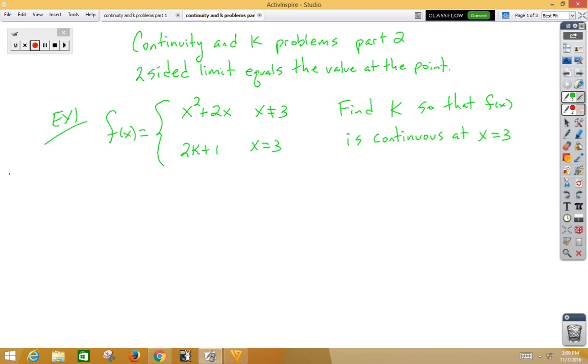So here we have a piecewise function, and the question is, find k so that f of x is continuous at x equals 3. Well, let's take a look. We have the top function says not equal to 3, so that's the part where we're going to do the two-sided limit. The bottom function says equal to 3, so that's the value at the point.